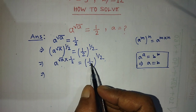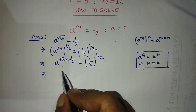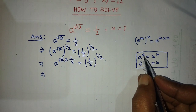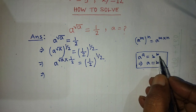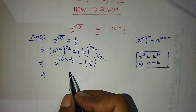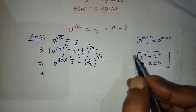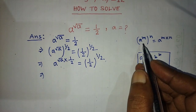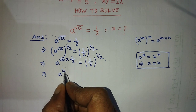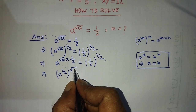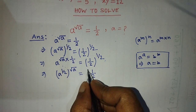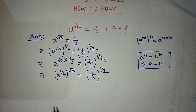To find the value of a from this algebraic equation, we have to arrange this equation in the form of a to the power a is equal to b to the power b. Then we are able to find the value of a. So we apply this formula again on the left hand side, and we can write a to the power half, whole to the power root over of a, is equal to 1 over 2 whole to the power half on the right side.